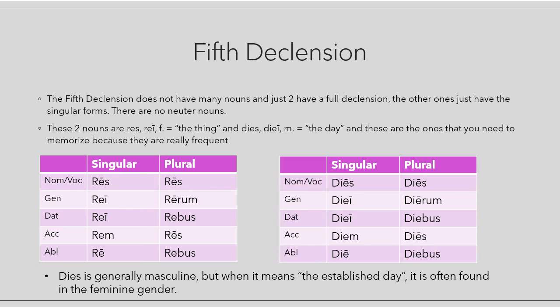The two nouns with full declensions are 'res, rei' (the thing) — possibly related to English 'reality' — and 'dies, diei' (the day), from which the adjective 'daily' derives. Singular of 'res': res, rei, rei, rem, re. Plural: res, rerum, rebus, res, rebus. Singular of 'dies': dies, diei, diei, diem, die. Plural: dies, dierum, diebus, dies, diebus.